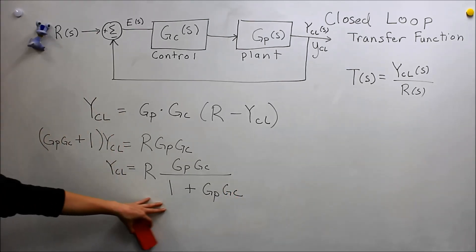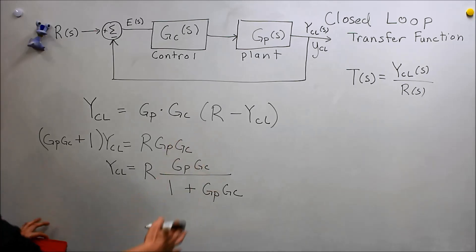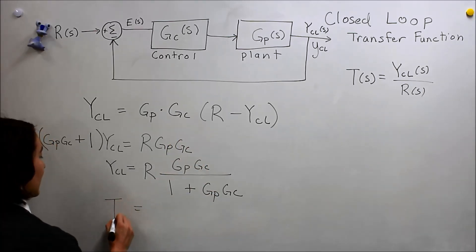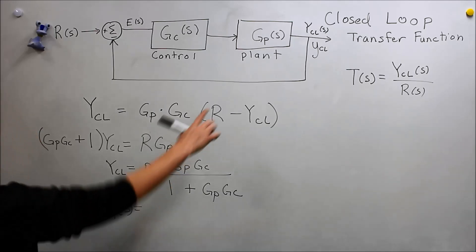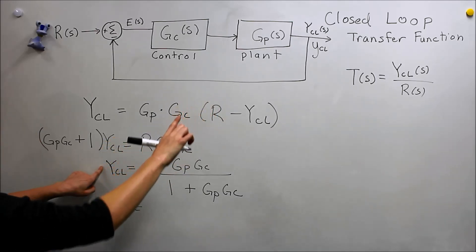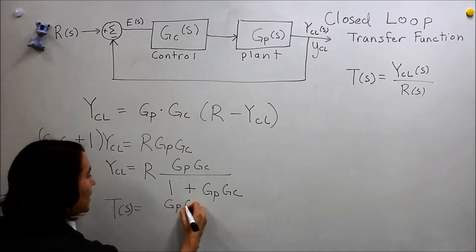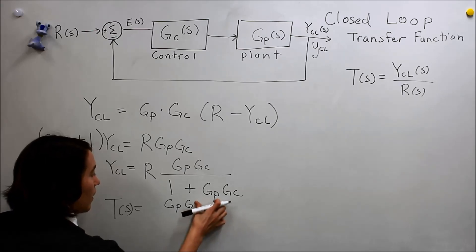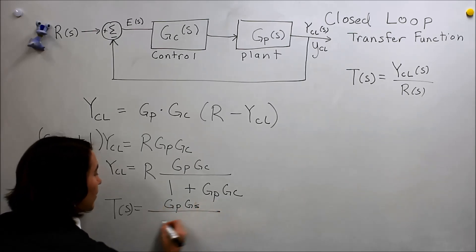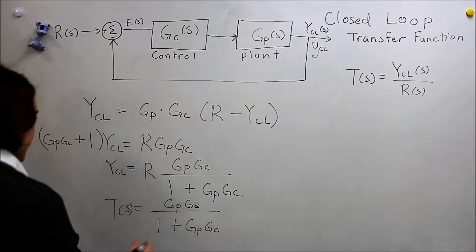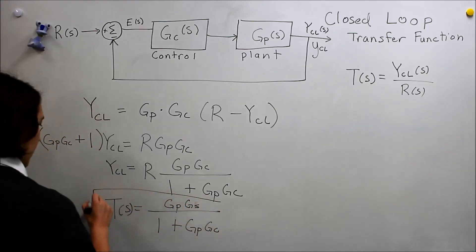This is almost there. To get the actual transfer function, all we need to do is divide by R. So T of s - the closed-loop output divided by the reference - is the two plants, or sorry, the plant and the controller multiplied together, divided by 1 plus those values. So this is our final expression.